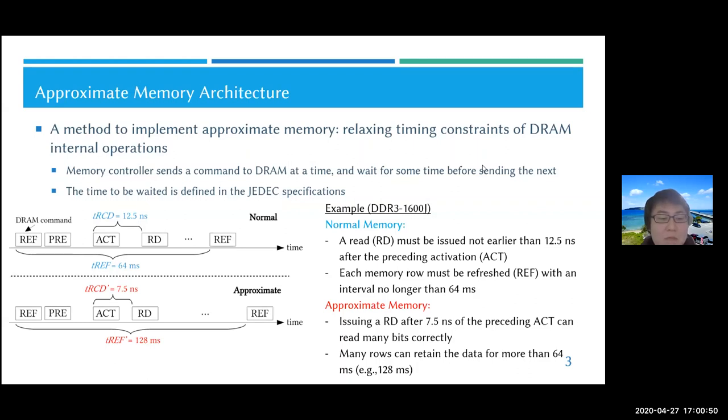But in approximate memory, you can shorten this value to, let's say, 7.5 nanoseconds, because real measurements on real chips in previous work found that by doing this, you only observe a few bit flips amongst many memory cells.